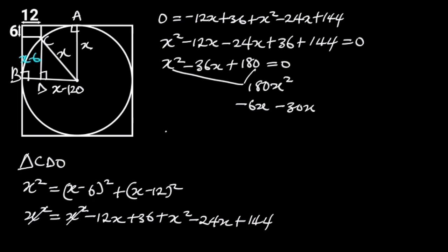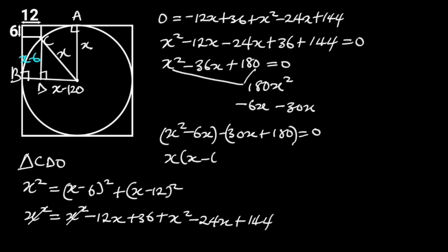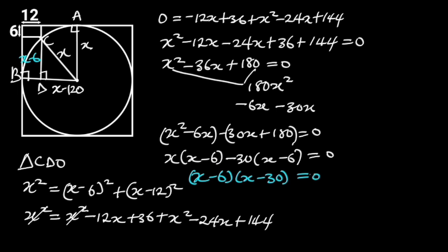So we have X squared minus 6X minus 30X plus 180 equals 0. Factoring out from each bracket gives X(X minus 6) minus 30(X minus 6) equals 0. Note that these two brackets must be the same. Hence, (X minus 6)(X minus 30) equals 0. It follows that X minus 6 equals 0, or X minus 30 equals 0.